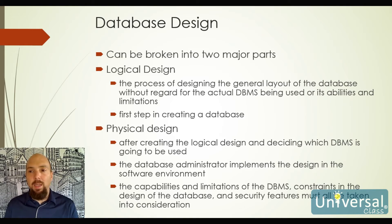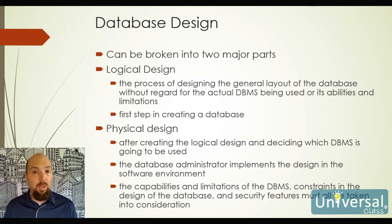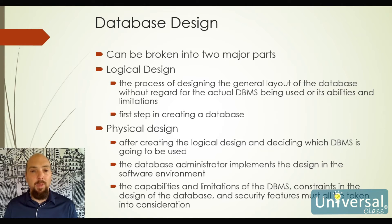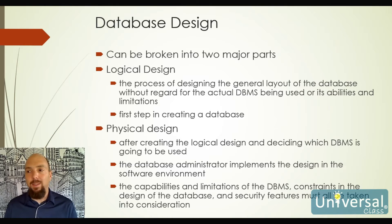Database design can be broken down into two major parts: logical design and physical design. Logical design is where I write down on paper or use a computer modeling program like Visio to design what I think the database should look like. We do this without regard to the capabilities and limitations of the particular DBMS we are using. This is our first step in creating a database — to get a general idea of what should be in it. After the logical design, we start implementing it and find that some things may not work exactly as expected because we'll run into limitations.